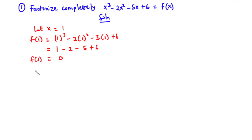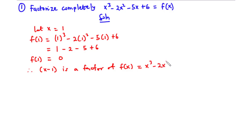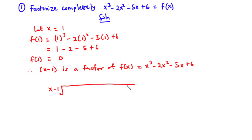Since f of 1 is equal to 0, it means that x minus 1 is a factor of f of x, which is x cubed minus 2x squared minus 5x plus 6. Now because we are factorizing completely, we need to divide f of x by x minus 1 using the long division method to obtain the other factors. So we have x minus 1 on the outside and x cubed minus 2x squared minus 5x plus 6 under the division bracket.